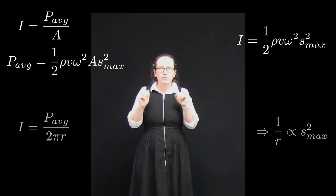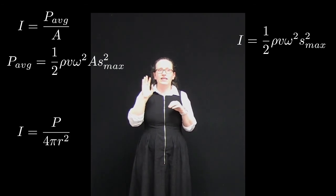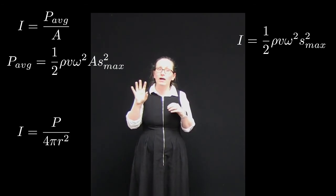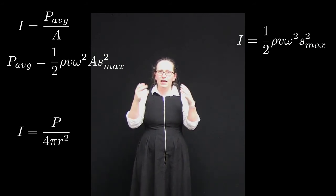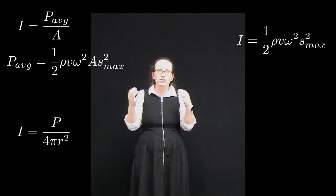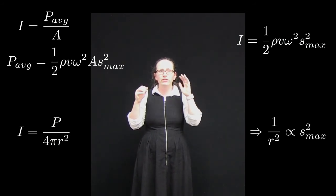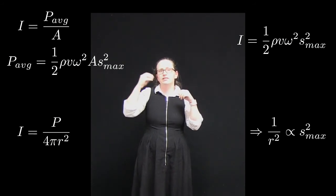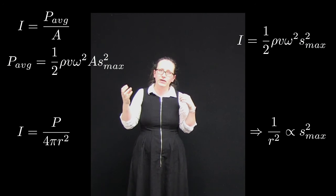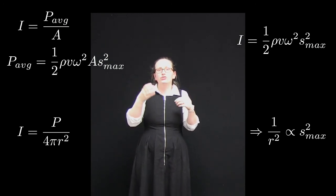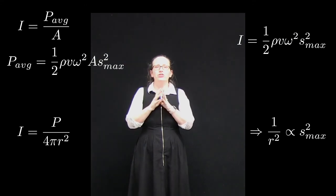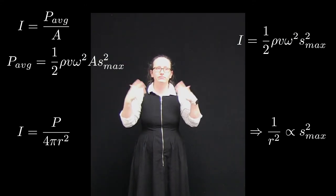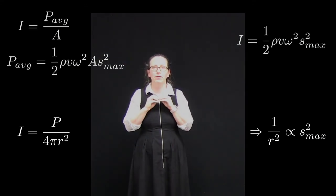In three dimensions, intensity = P_average / 4πr², which equals ½ρvω²s_max². Assuming P_average, ρ, v, and ω remain constant, 1/r² is proportional to s_max², so the amplitude drops off as 1/r. Now try using these relationships to solve a problem.